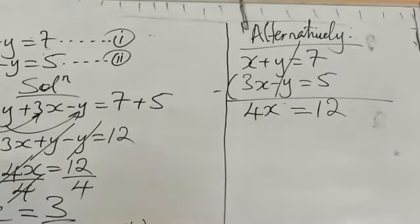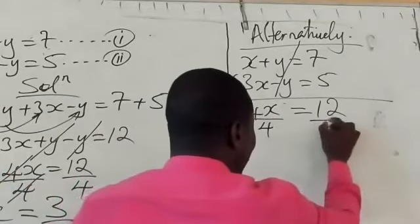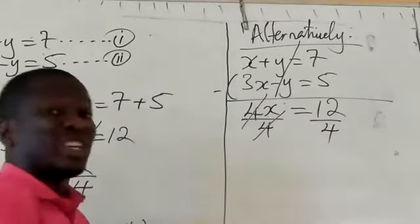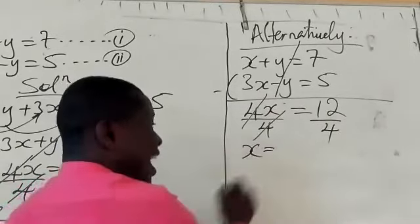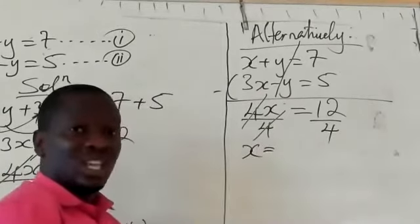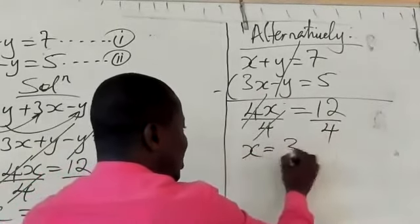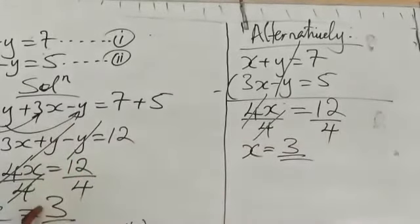Finally, to find the value of x, we divide both sides by the coefficient of x, which is 4. So we divide both sides by 4. 4 and 4 cancel on the left-hand side, and then x equals 12 divided by 4, which is 3. So we get the same answer using this method.